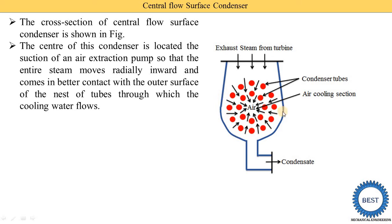Why radially? Because this is a circular cross-section — in a circle, the steam moves radially inwards. As you can see, the arrows indicate radially inward movement. The steam comes into better contact with the outer surface of the nest of tubes — that is, the number of tubes through which cooling water flows. Steam flows from the outside, and because it moves radially inward, it comes into better contact with the tubes and proper cooling is carried out.